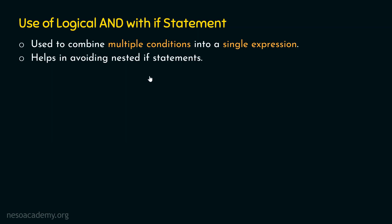In order to understand this better, let's consider one simple example. Let's say that we want to write a program to check whether a person is eligible for some ABC exam or not. The eligibility criteria is quite simple: if the age of the person is greater than 18, and if the age is less than 30, and if the nationality of the person is Indian, then only he or she is eligible for the exam. Otherwise, he or she is not eligible.